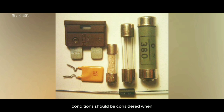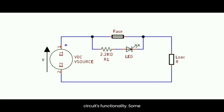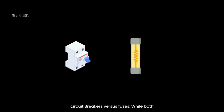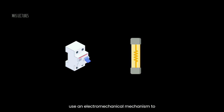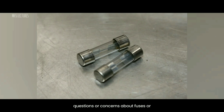Environmental conditions should be considered when choosing a fuse. When a fuse blows, it needs to be replaced to restore the circuit's functionality. Some fuses have a transparent window for visual inspection to determine if the fuse element is intact or blown; in other cases, additional indicators may be used. While both circuit breakers and fuses provide protection against overcurrents, they function differently — circuit breakers use an electromechanical mechanism to trip and interrupt current flow, while fuses rely on a fuse element that melts. Circuit breakers can be reset manually, whereas fuses need to be replaced after they blow. Working with electrical systems and fuses can be dangerous and should be done by trained professionals.